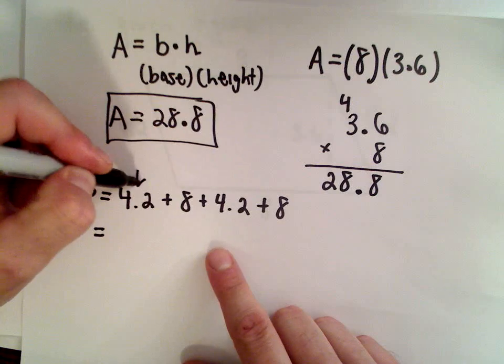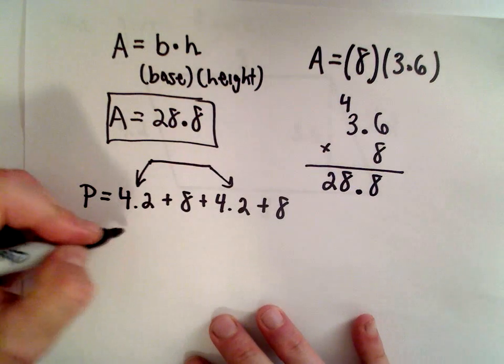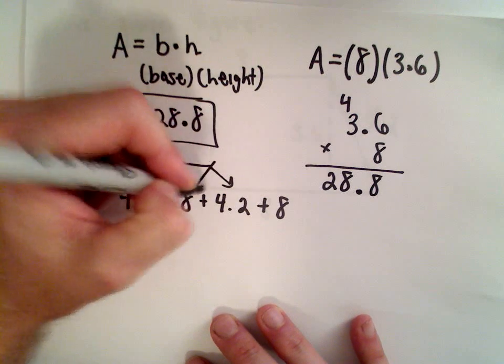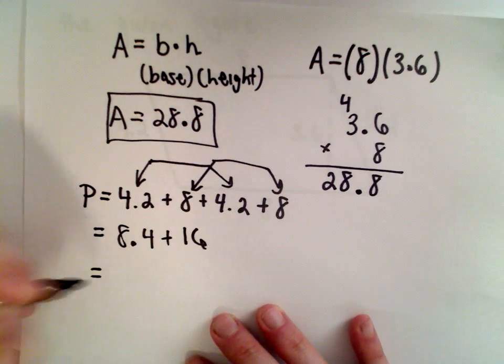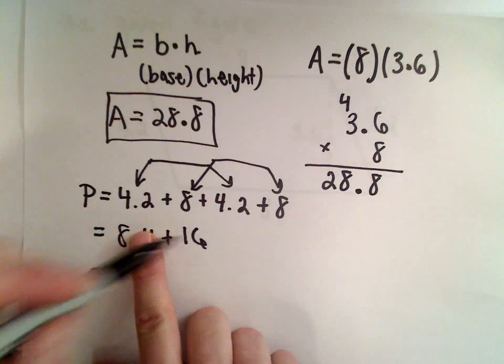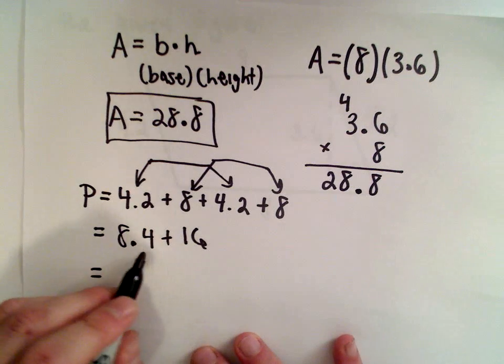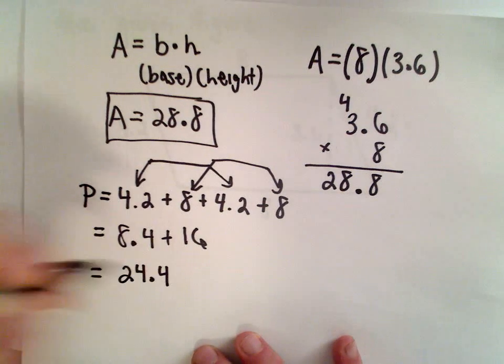4.2 and 4.2, if we add those together, that's 8.4. If we add the 8 and the 8, that's 16. So 8 plus 16 would be 24, and then we still have to remember the 0.4. So 8.4 plus 16 gives us a value of 24.4.